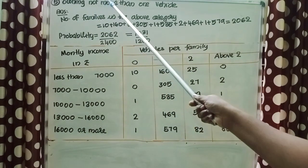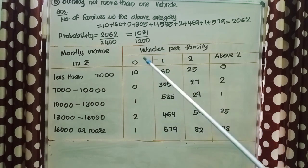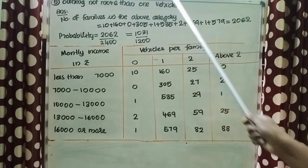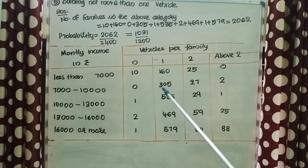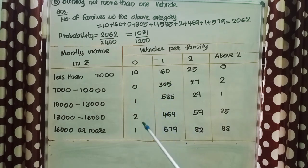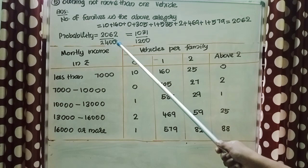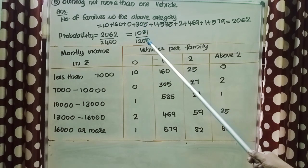Fifth question: probability of a family owning not more than one vehicle. In the table, the first two columns (0 vehicles and 1 vehicle) are relevant. Number of families = 10 + 160 + 0 + 305 + 1 + 535 + 2 + 469 + 1 + 579 = 2,062. Therefore probability = 2,062/2,400, which reduces to 1,031/1,200.